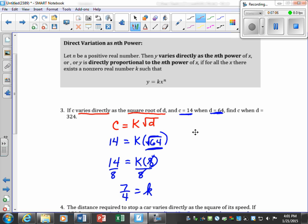Now, we write our equation again, and then we always plug in our k to start, 7 fourths. Then we come back to the problem. It says find c, so I know I'm looking for c, when d is 324. So I have the square root that's already there, and I fill in 324 for d. Let me bring 7 fourths down. The square root of 324 is 18.